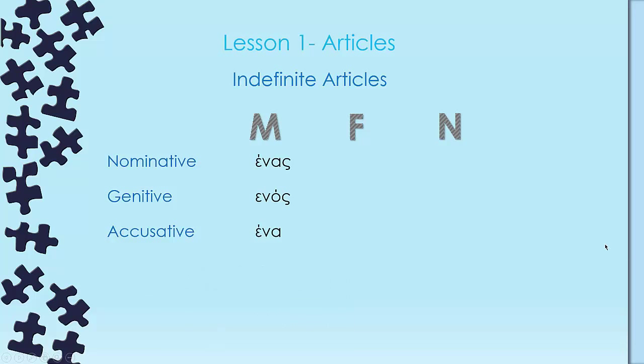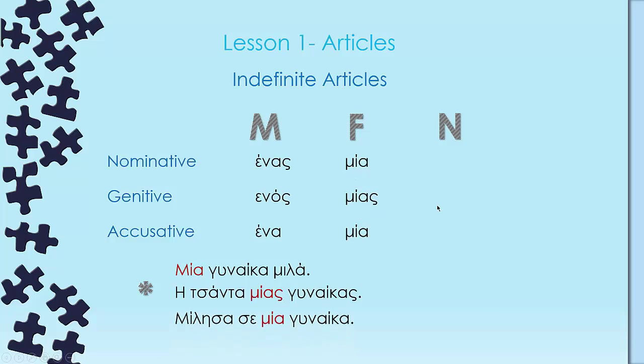Female indefinite articles. We have μία, μίας, μία. Let's see some examples here. Μία γυναίκα μιλά, which translates to a woman speaks. So a woman is the subject of our sentence, so it's going to be in nominative, μία. Η τσάντα μίας γυναίκας, the bag of a woman. So whose is the bag? It's the woman's, so genitive, μίας. Μίλησα σε μία γυναίκα, I spoke to a woman. Now the woman here is the object of our sentence, so we're going to use μία, accusative.